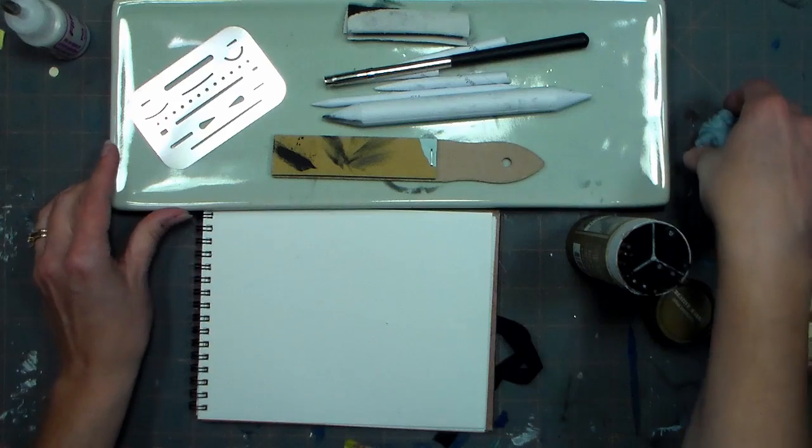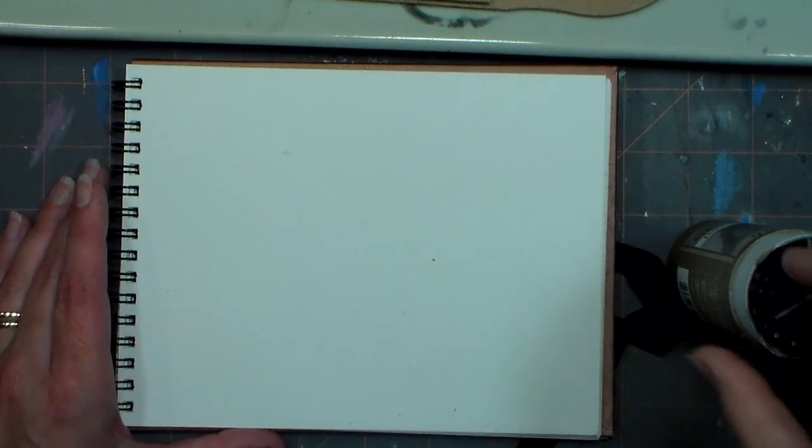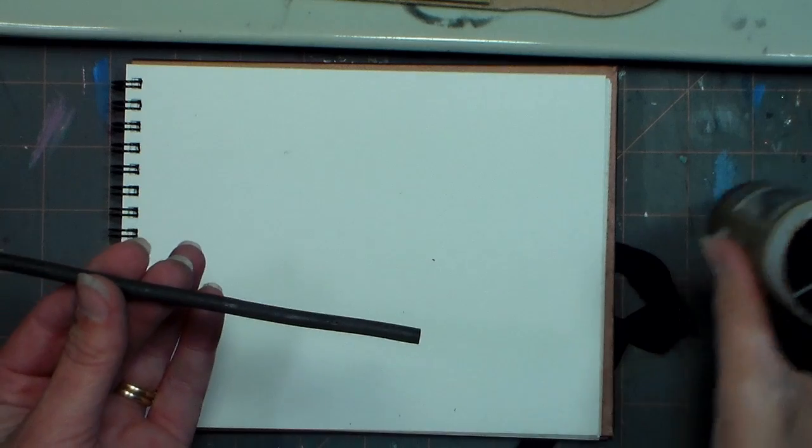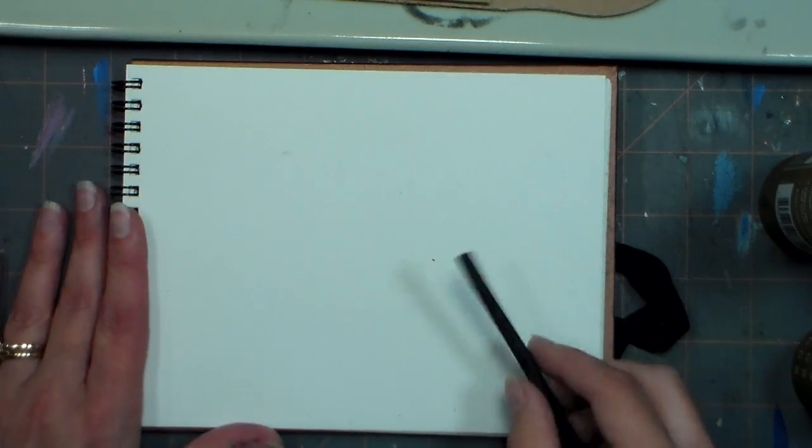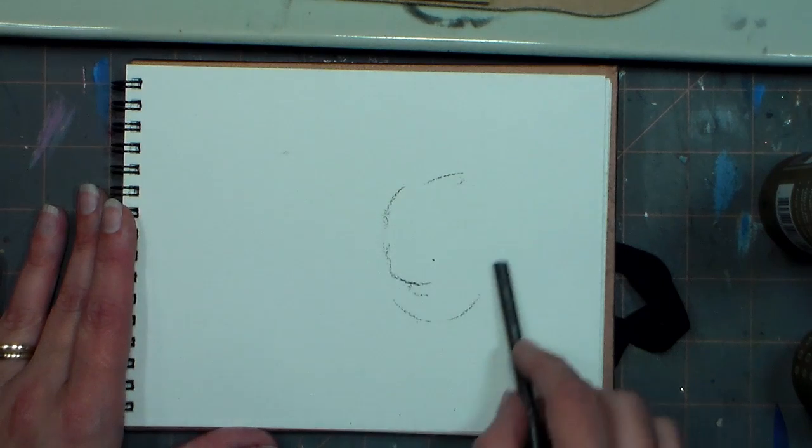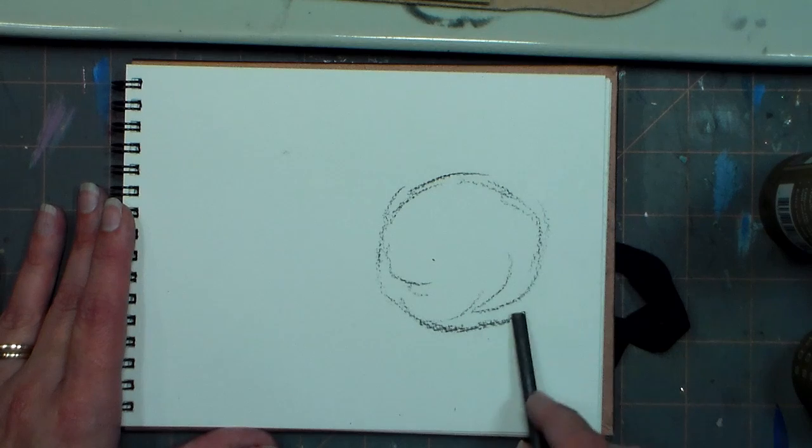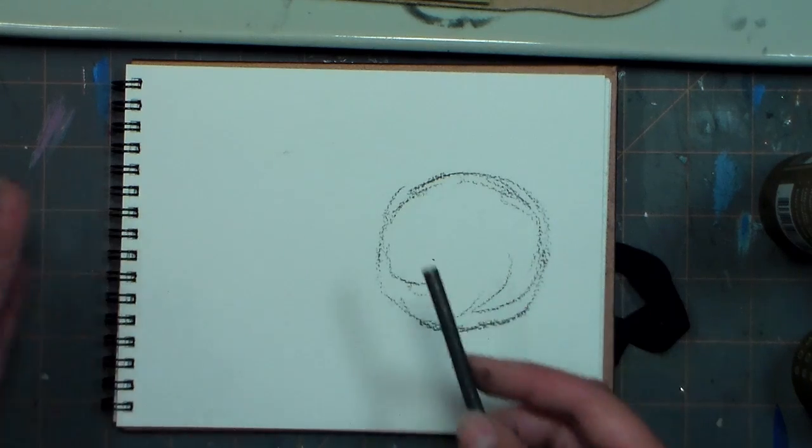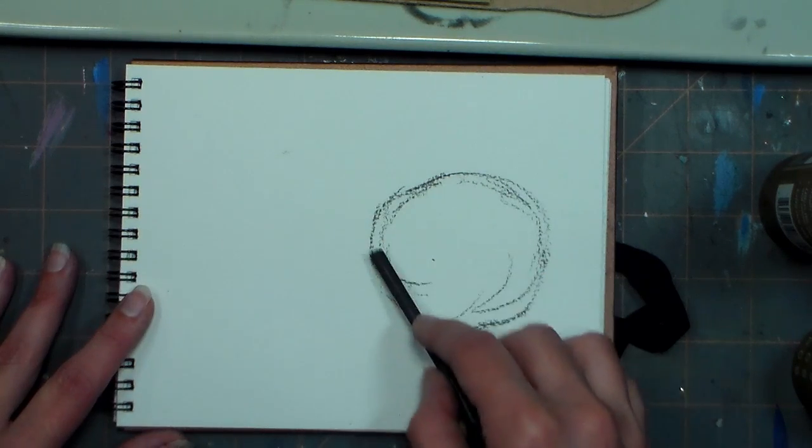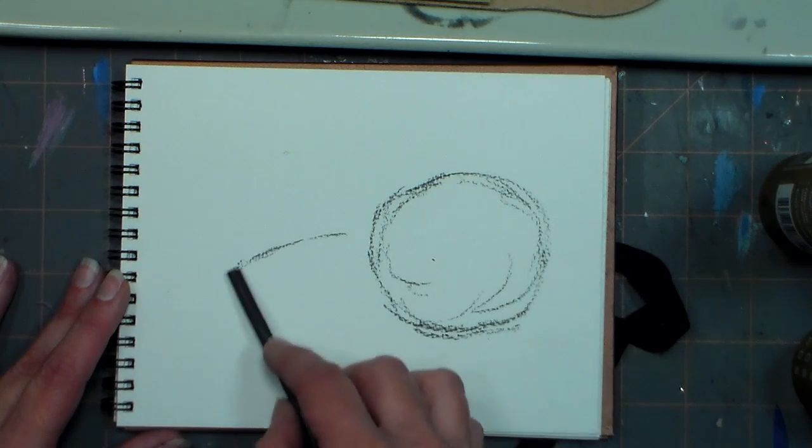So without further ado, let's get into our tutorial. I'm gonna zoom in a bit so you can see my paper a little bit closer, and we're gonna start by sketching with our medium-sized stick of willow charcoal. I'm gonna do a pomegranate and also one that's cut in half. I'll put a link to the reference photo I used in the video description. I'm gonna start by making kind of a bumpy circle - pomegranates are not perfectly round.